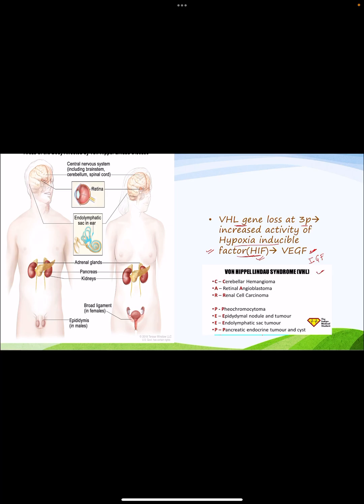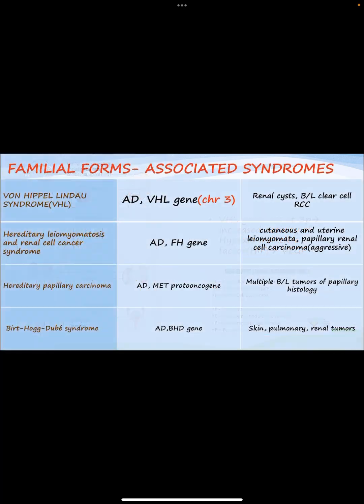There is a mnemonic for the components of von Hippel-Lindau syndrome: C for cerebellar hemangioma, A for retinal angioblastoma, R for renal cell carcinoma, P for pheochromocytoma, papillary cystadenoma, nodule, E for endolymphatic sac tumor, and P for pancreatic endocrine tumor and pancreatic cyst.